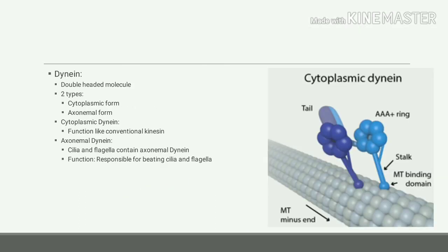Dynein is also a double-headed molecule. Dynein is of two types: one is the cytoplasmic form and the second is the axonemal form. Cytoplasmic dynein acts like conventional kinesin in that it moves cargo towards the negative terminal of the microtubule.